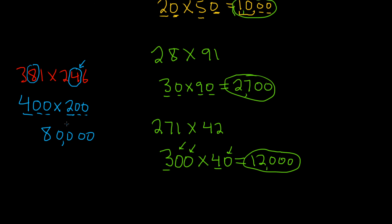So every single time, just round to the highest place value and then multiply and then count zeros and all is good. I hope this video has been helpful.